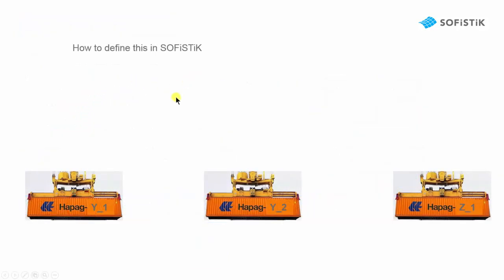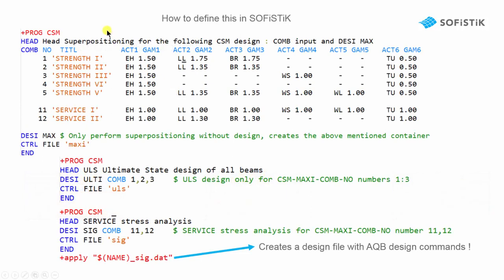How to define this in SOFiSTiK? We first define our superpositioning in a first CSM task, defining the combinations strength and service with the safety factors. And tell the program to create the containers.